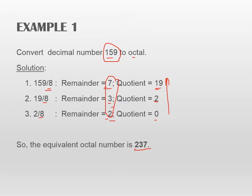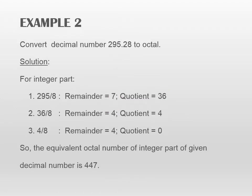Let us see another example where we are considering both the integer part and the fractional part. The decimal number is 295.28, where 295 is your integer part and 0.28 is your fractional part.